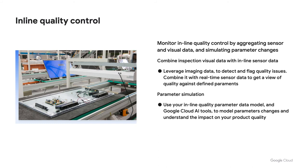Inline quality control is very important. We can use our sensor data and visualization data, run models, simulate what's happening on the factory, and leverage data to flag issues in real time. If we can stop defects happening on the factory floor, it provides a huge benefit to manufacturing operations.